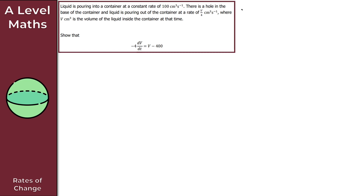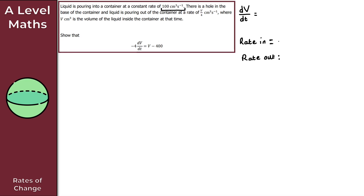What we're looking for is dV/dt, which represents the rate of change of volume inside the container with respect to time t. To find this rate of change, we consider two things: the rate going into the container and the rate going out. For the rate in, we're told liquid pours in at a constant rate of 100 cm³ per second, so rate in = 100.